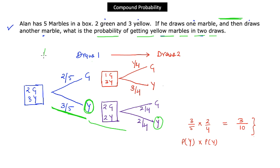The method used in this example is called the tree diagram method, because as you draw out possible outcomes you see different branches forming. It is also useful when you have more than two sequential events. Combined with the matrix method from the previous example, these are two solid methods for calculating compound probability.